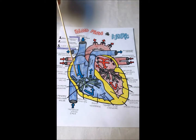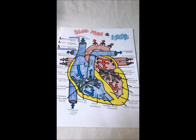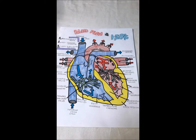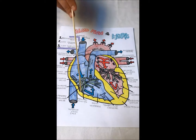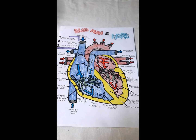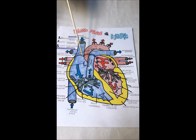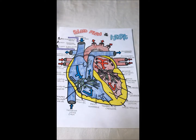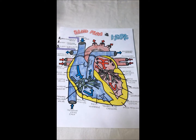Here we have the chordae tendineae. These fibers hold on to the tricuspid and bicuspid valves and allow them to open and close. The chordae tendineae are attached to papillary muscles, which are projections that pull on the chordae tendineae and make them move. Then there is the fossa ovalis, which is an oval-shaped depression, and the trabeculae carneae, which are muscle ridges in the ventricles.